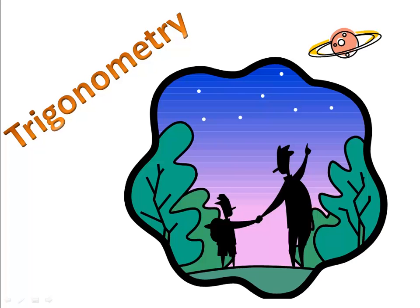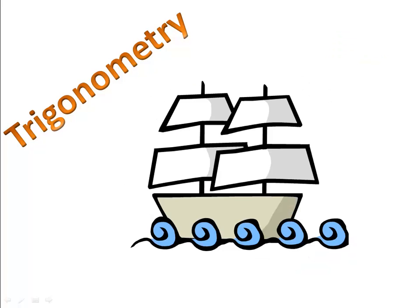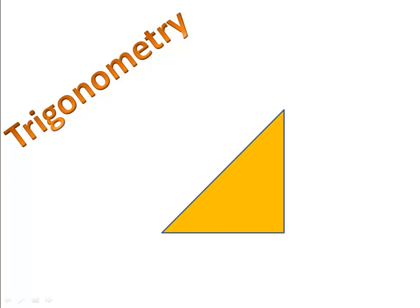Trigonometry — the branch of mathematics that has enabled people to study heavenly bodies and sail the seven seas for centuries. So what exactly is trigonometry? Trigonometry is simply the study of triangles. When we look at triangles, we like to compare the lengths of the sides, and we like to look at the angles.